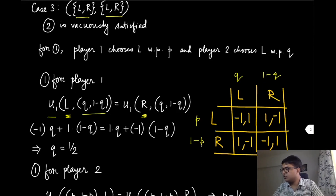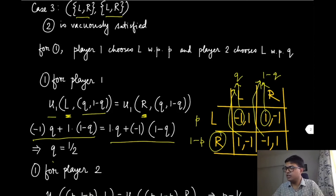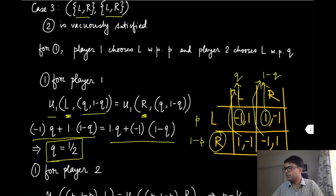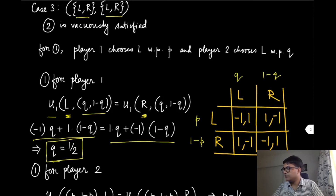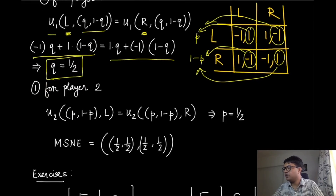For player 1 to satisfy condition 1, the expected utility when choosing L must equal the expected utility when choosing R, given player 2's mixed strategy. That gives: (-1)·q + (1)·(1-q) = (1)·q + (-1)·(1-q). Solving this equation yields q = 1/2. Similarly, for player 2 to satisfy condition 1, we equate expected utilities across L and R given player 1's mixing: (1)·p + (-1)·(1-p) = (-1)·p + (1)·(1-p), which gives p = 1/2.